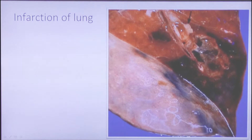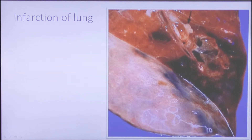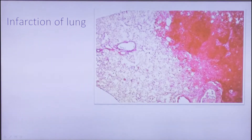This is lung infarction — a type of necrosis due to vessel blockage. In the lungs it is always a red infarction, due to the special features of hemodynamics in the lung. Microscopically, we also see this red area of infarction.